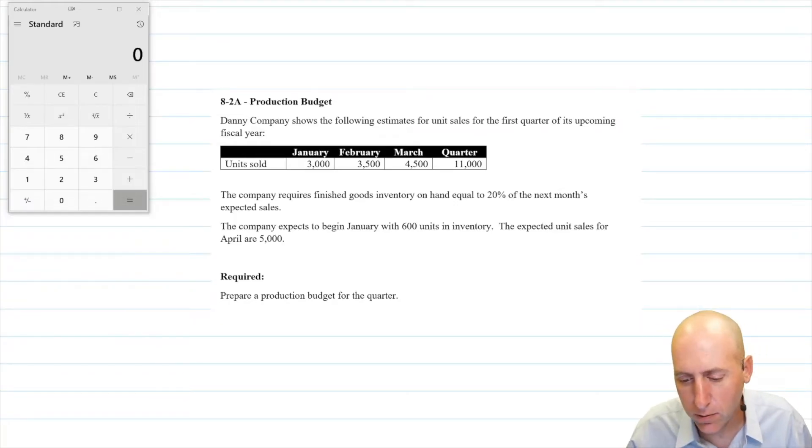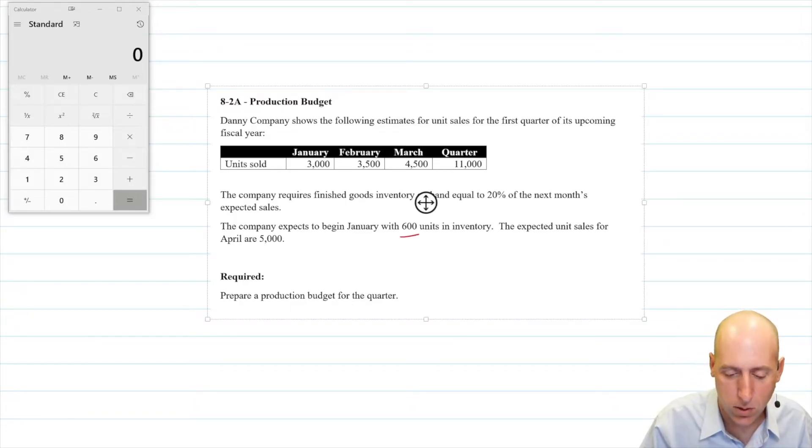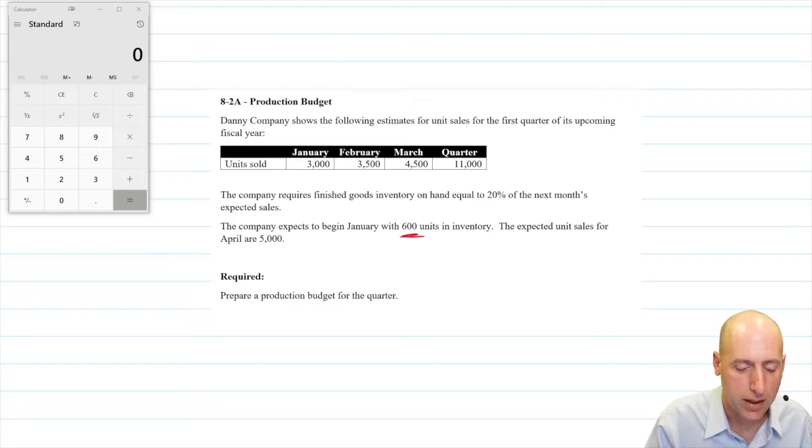Here we go. Danny company shows the following estimates for unit sales for the first quarter of its upcoming fiscal year. Units sold 3,000, 3,500, 4,500. And that's for January, February, March, for the quarter 11,000. The company requires finished goods inventory on hand equal to 20% of the next month's expected sales. So that's just what we were saying before where if we're planning to sell 3000 units, not only do we have to make those 3000 units, we also want to have some leftover. The company expects to begin January with 600 units in inventory and the expected sales for April are 5,000.